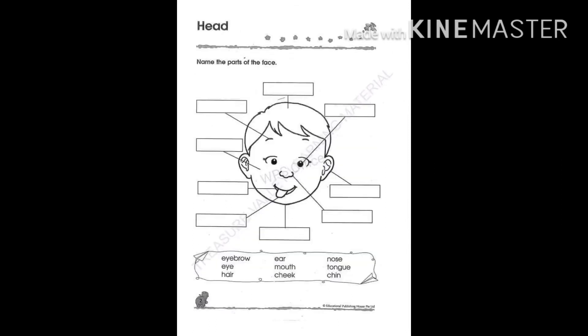Head. Name the parts of the face. Look at the words in the box. Eyebrows, eye, ear, mouth, cheek, nose, tongue, chin.